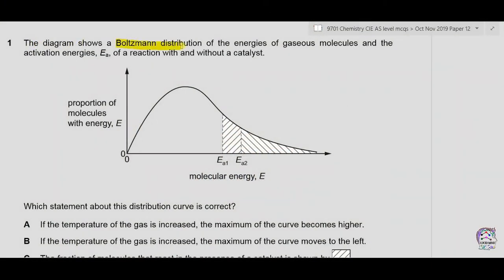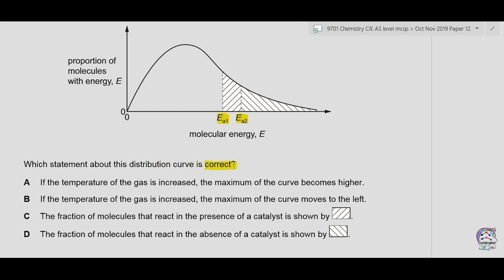Question 1. The diagram shows a Boltzmann distribution of the energies of gaseous molecules and the activation energy of a reaction with and without a catalyst. The y-axis shows proportion of molecules with energy E; the x-axis shows two activation energies, EA1 and EA2. Option A states that if temperature is increased, the maximum of the curve becomes higher — this is incorrect, as the area under the curve always remains constant, so the hump decreases and the tail increases.